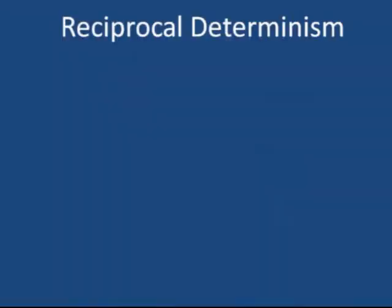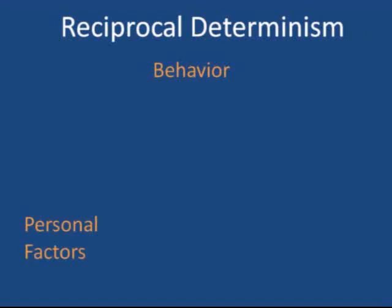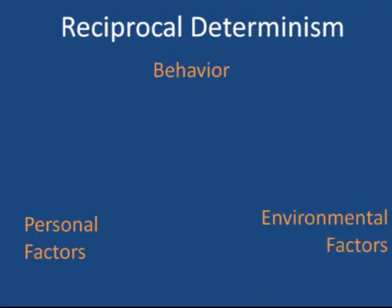The foundation of Bandura's social cognitive theory is reciprocal determinism. Behavior includes the actions we take and the tasks we perform, whether they be positive, negative, or neutral. Personal factors include cognitive, affective, and biological events — it is the how and the why of the equation — while the environment encompasses the who, what, and where of our actions: what is happening around us when we act a certain way, not just the physical location we find ourselves in.